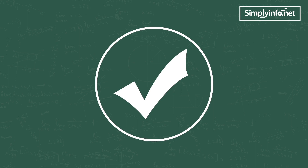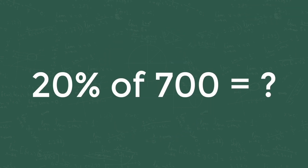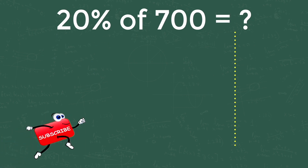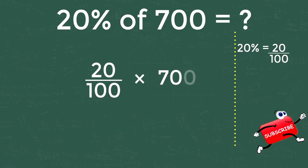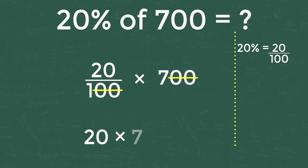The first problem: 20 percentage of 700. 20 percentage is 20 by 100 into 700. Two zeros above and two zeros below are cancelled. 20 into 7 is 140, so the answer is 140.